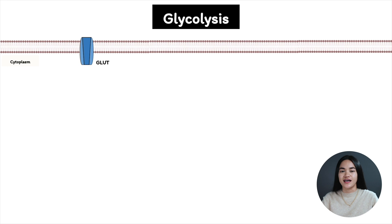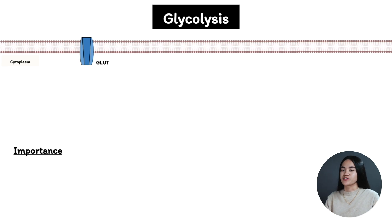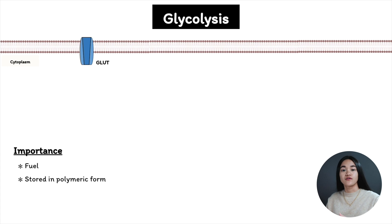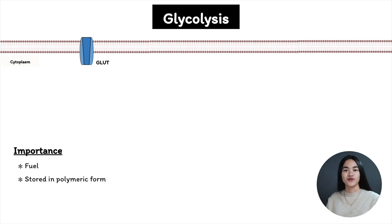Before we go through the process, let's first discuss why glucose is important. When we oxidize glucose, we produce energy. We use glucose as a fuel; we can store glucose in the polymeric form such as glycogen, and when we need energy, we can break down these polymers into glucose to produce ATP. We obtain glucose from our diet, from stored glucose, or our body can synthesize glucose via gluconeogenesis, which is a topic for another lecture.